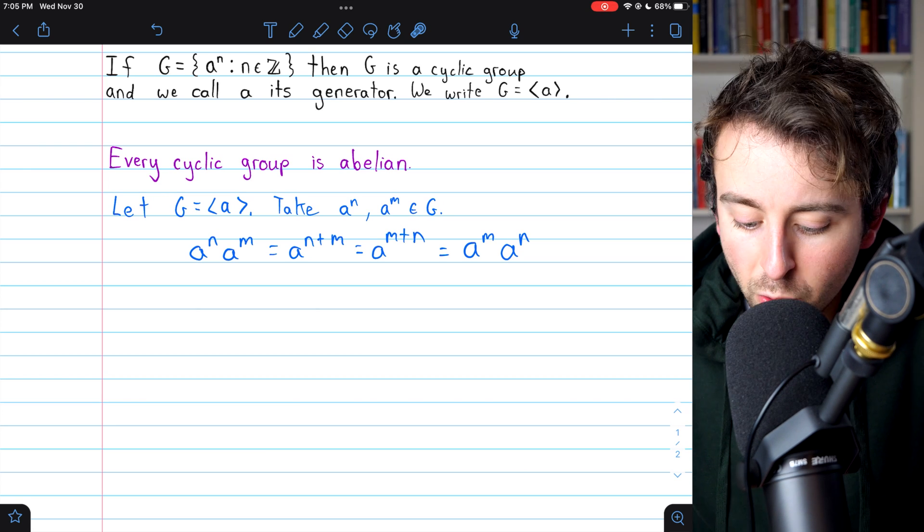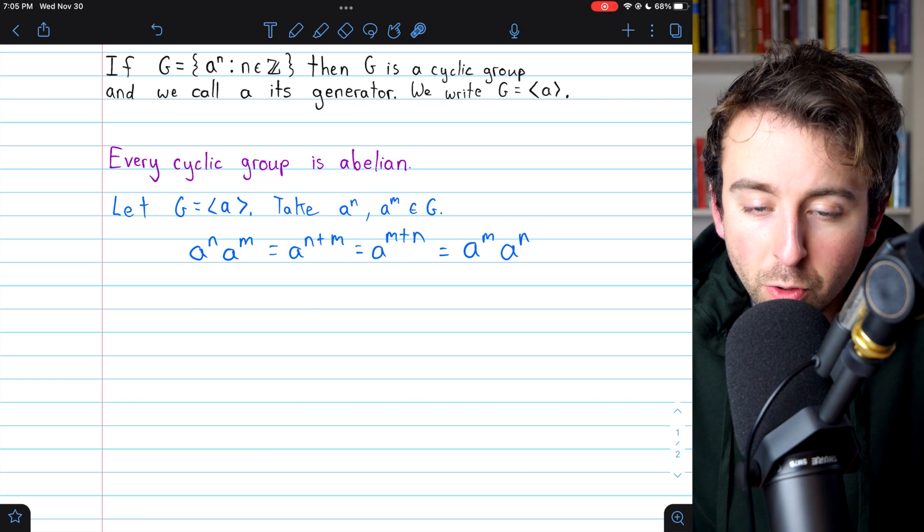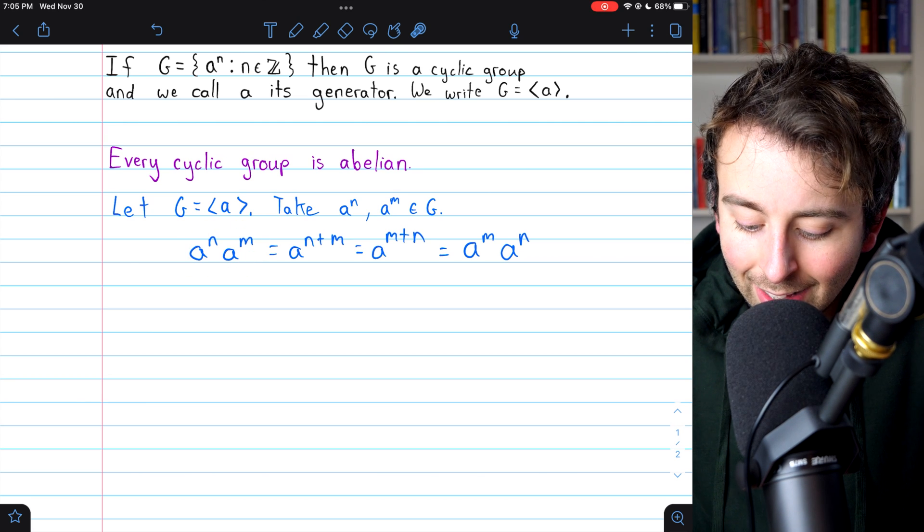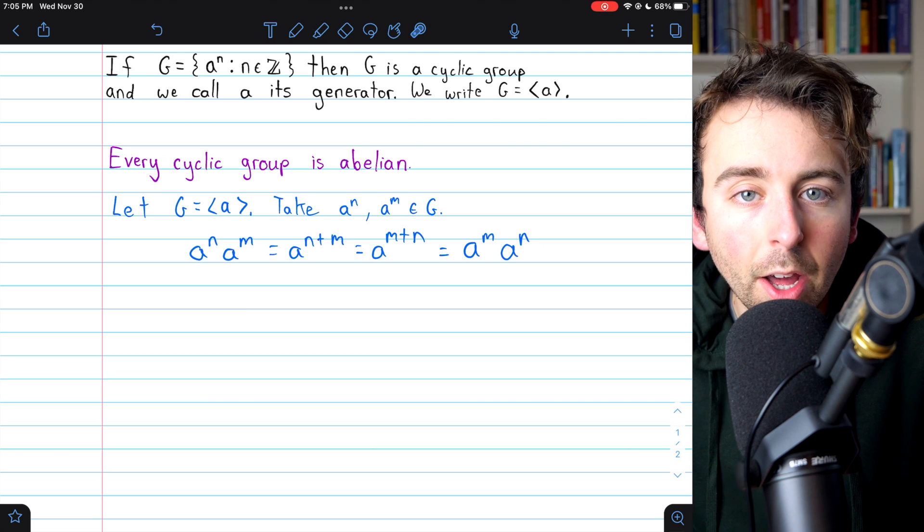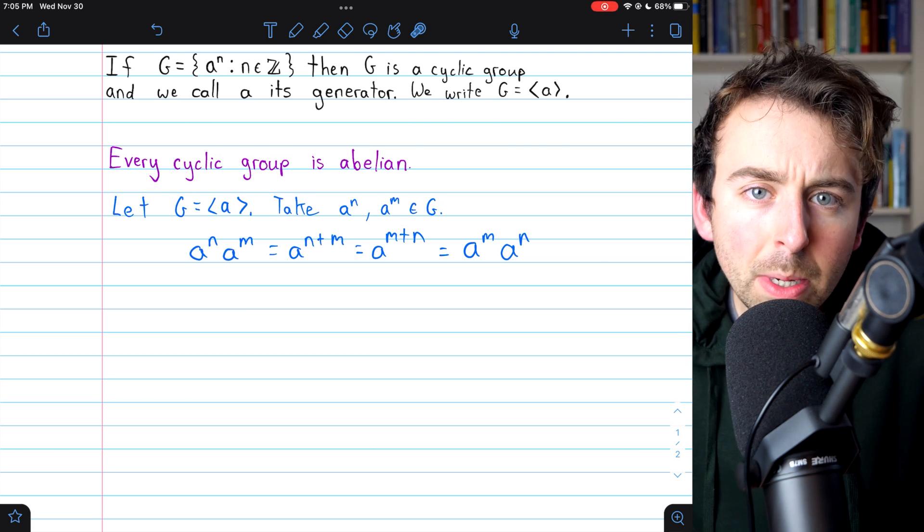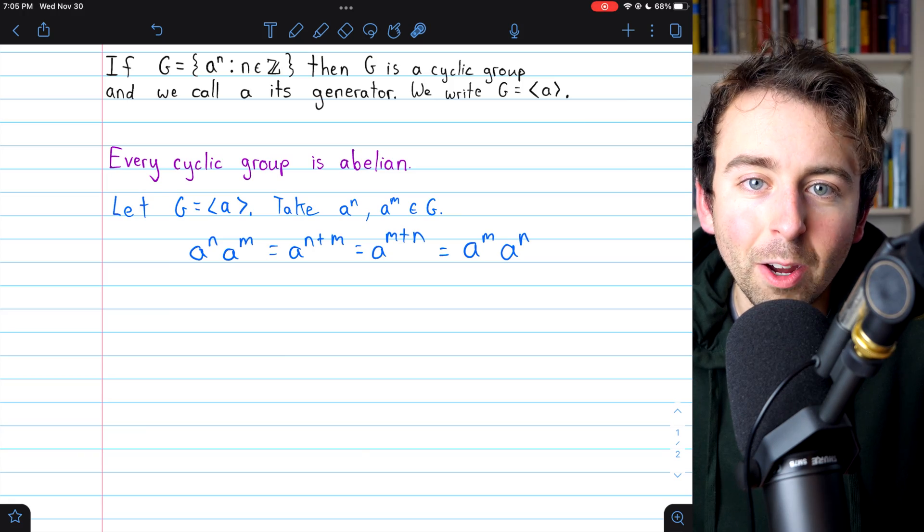We've taken two arbitrary elements from an arbitrary cyclic group and shown that if you combine them in one way, that's equal to combining them the other way. Every cyclic group is abelian. Pretty sweet. Let me know in the comments if you have any questions or video requests.